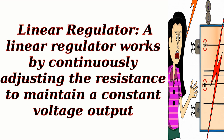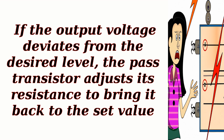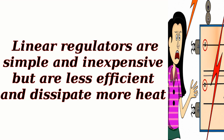Linear regulator. A linear regulator works by continuously adjusting resistance to maintain a constant voltage output. It uses a pass transistor and a feedback loop that compares the output voltage to a reference voltage. If the output voltage deviates from the desired level, the pass transistor adjusts its resistance to bring it back to the set value. Linear regulators are simple and inexpensive, but less efficient and dissipate more heat.